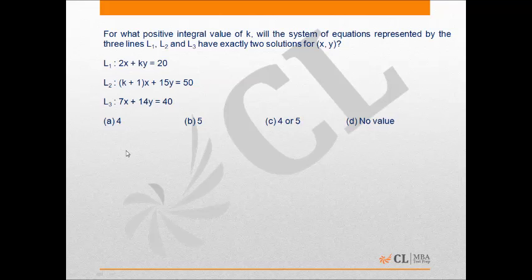Now a system of three lines will have exactly two solutions if two lines are parallel and one line just intersects them and is not parallel.